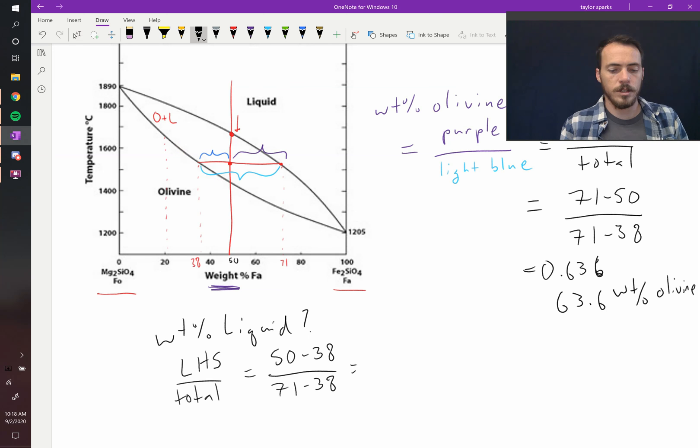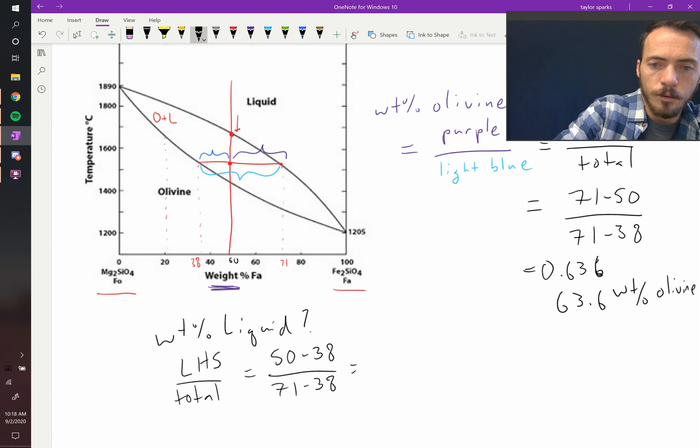And this equals, punch it in, 50 minus 38 divided by 71 minus 38, I get that that's equal to 36.3. Or, round it up to 36.4 equals 36.4 weight percent liquid.